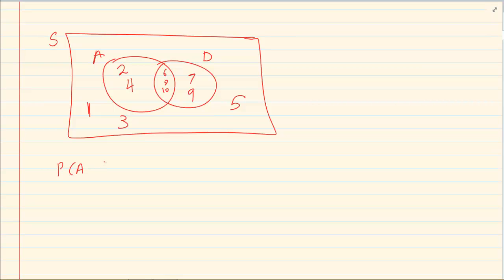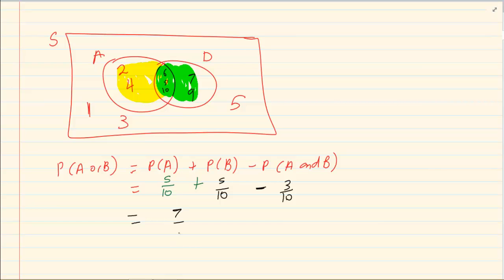Now let us use the formula. We have that P of A is 1, 2, 3, 4, 5. Remember we have to count all. We have to take the entire of A. So we have it as 5 over 10. Then we have P of B which is also 5 over 10. Then we have minus P of A and B which is 3 over 10. Now that gives us 5 plus 5 is 10 minus 3 is 7 over 10. Therefore, event A and D is not exhaustive.